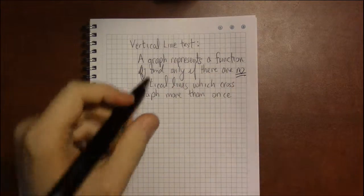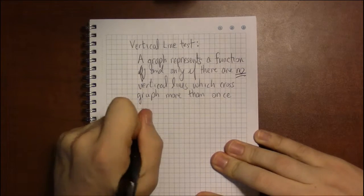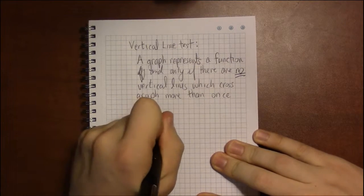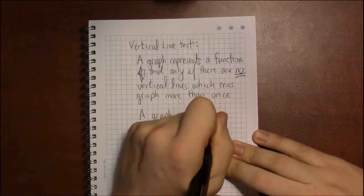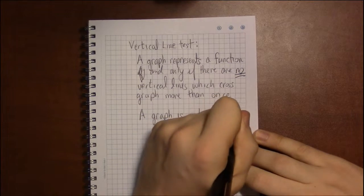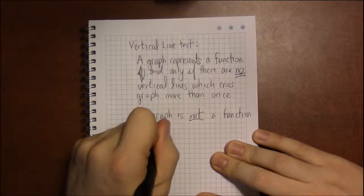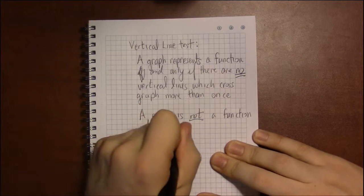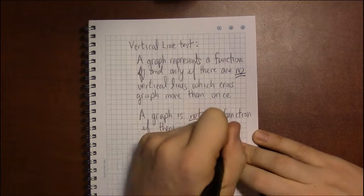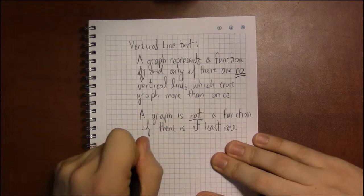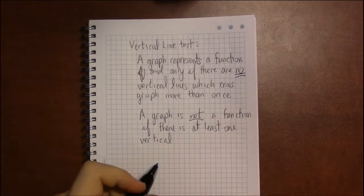In other words, if we flip this around, a graph is not a function if there's at least one vertical line which crosses the graph more than once.